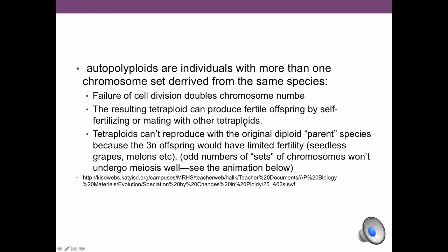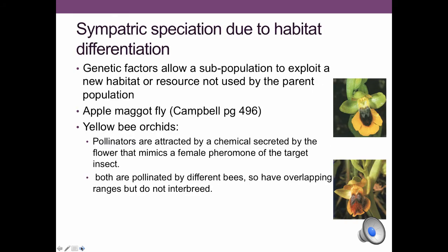In sympatric speciation via polyploidy, a fluke in cell division doubles the chromosome number, producing tetraploids. These tetraploids can self-fertilize because they have an even number of chromosomes, or they can mate with any other tetraploids that arise. However, they cannot reproduce with their original parent species because the odd chromosome number would prevent meiosis from occurring.